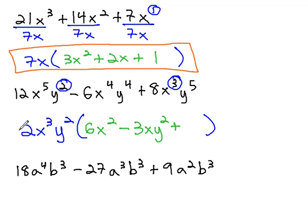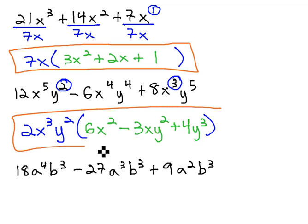Plus 8 divided by 2 is 4. The x³'s divide out completely, and y⁵ divided by y² is y³, and we have our final solution.